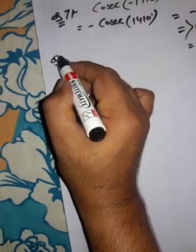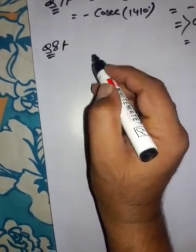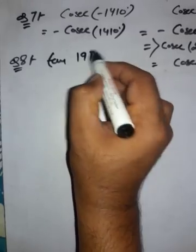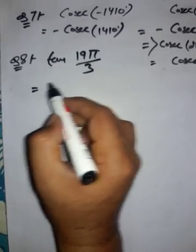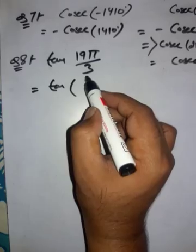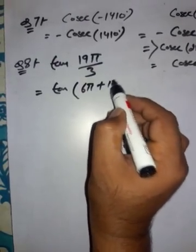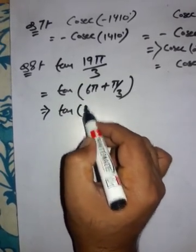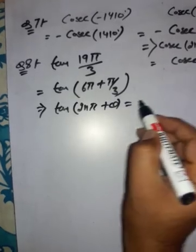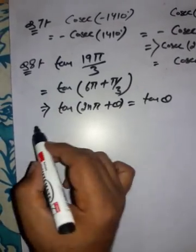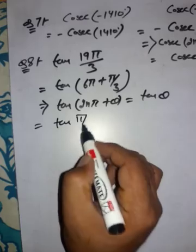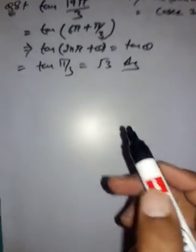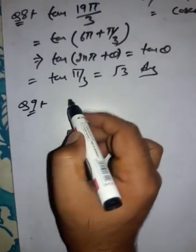Question 8: tan(19π/3). We write 19π/3 = 6π + π/3, which is of the form 2nπ + θ. Using tan(2nπ + θ) = tan θ, we get tan(π/3) = tan 60° = √3. Therefore our answer is √3.